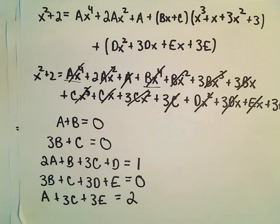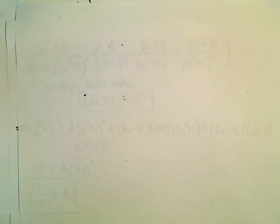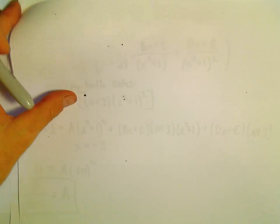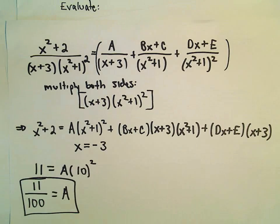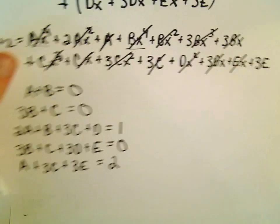And we should just be left with constants: A plus 3C plus 3E equals the constant on the left, which is positive 2. We've already figured out that A equals 11 over 100.